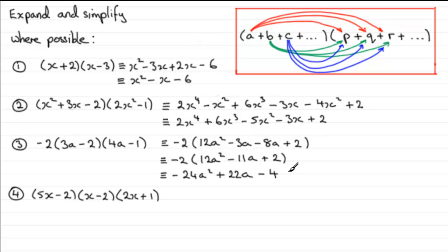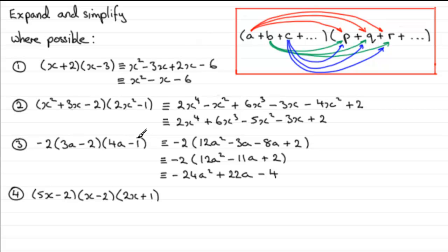There are no like terms so we finish there. You could have done this in other ways — you could multiply minus 2 with the first bracket to get minus 6A plus 4, then multiply that with 4A minus 1, and check you get the same answer. Or multiply minus 2 with 4A minus 1 first. Don't make the mistake of multiplying each bracket by minus 2 — you only select one. That's why I'd still go with the method shown here.